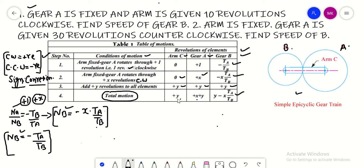In all the questions of the epicyclic gear train, we are going to draw this table depending upon the number of gears we have. Here we have a question: if gear A is fixed and the arm is given 10 revolutions clockwise, find the speed of gear B.